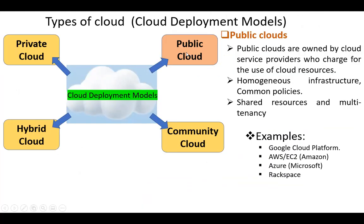The next type of cloud, or cloud deployment model, is the public cloud. Public clouds are owned by cloud service providers who charge for the use of cloud resources. Some of its characteristics are homogeneous infrastructure, common policies, shared resources, and multi-tenancy. Examples are Google Cloud Platform, Amazon Platform, Microsoft Azure, Rockspace, and others.